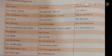In masculine, 'der Sohn' — Sohn means son. In feminine, 'die Tochter' — Tochter means daughter. In masculine, 'der Bruder' — Bruder means brother. In feminine, 'die Schwester' — Schwester means sister. 'Der Enkelsohn' means grandson. 'Die Enkeltochter' means granddaughter.